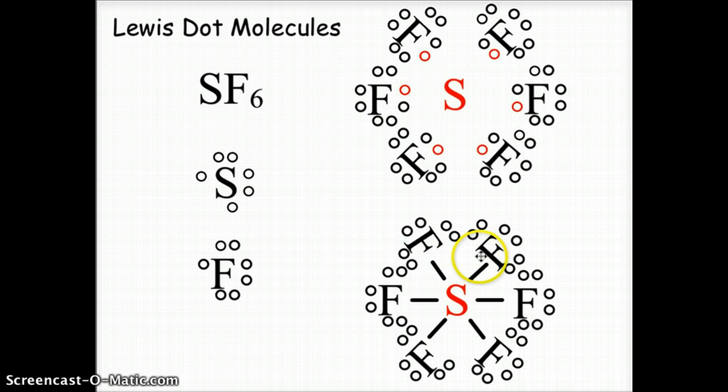where we have single bonds to the fluorine atoms from that sulfur as the central atom. And we have a hexagonal arrangement of those fluorines around that sulfur atom.